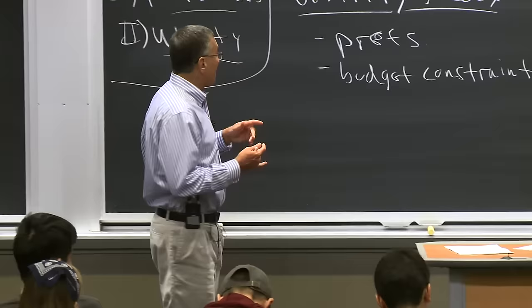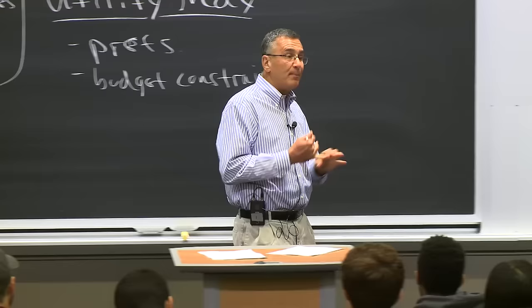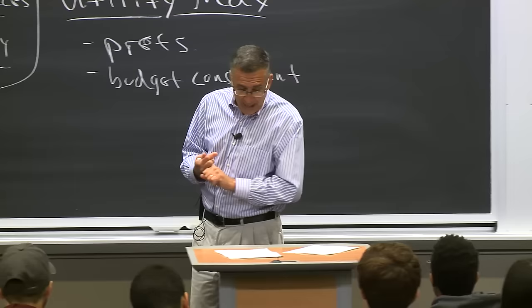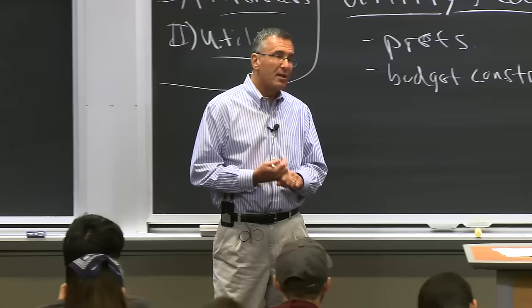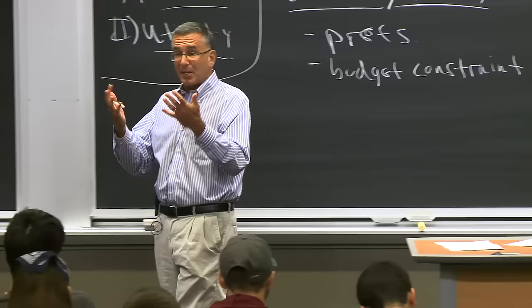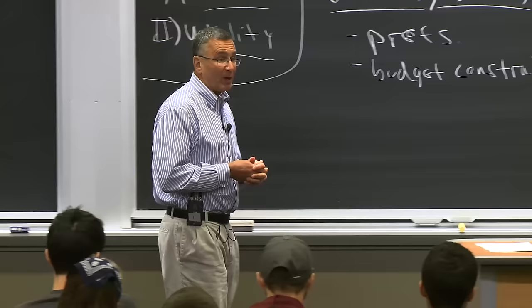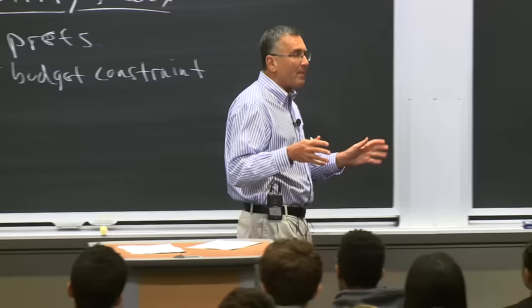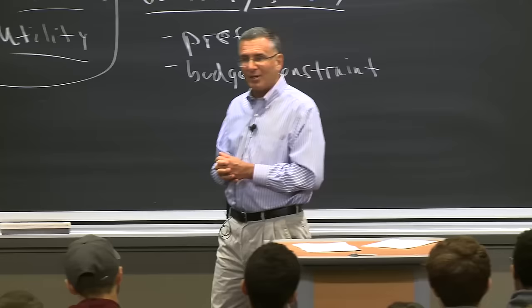We're going to do this in three steps over the next two lectures. Step one: we'll talk about preferences — how do we model people's tastes? We'll do that today. Step two: we'll talk about how we translate this into a utility function, the mathematical representation of preferences. We'll also do that today. And then next time, step three: we'll talk about the budget constraints people face. Today is about the maximum — unconstrained choice. We're not going to worry at all about what you can afford.